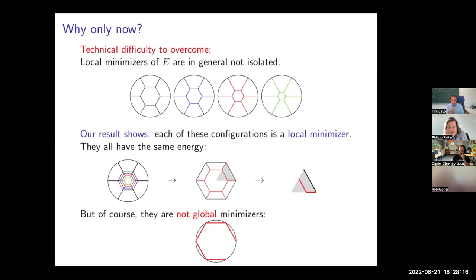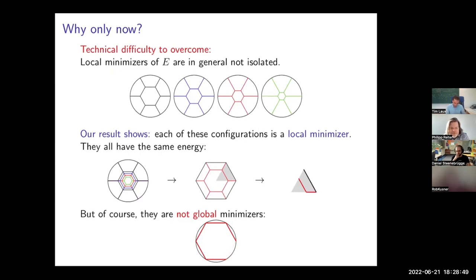This non-isolation issue also comes up in mean curvature flow: Kinderlehrer and Liu (2001) studied slight perturbations of these configurations under curve-shortening flow. They prove long-term existence and convergence to a critical point in the family, but not necessarily the same one. For example, indenting slightly leads to convergence to a different member of the family. The reason is the von Neumann rule for multi-phase curve-shortening flow.